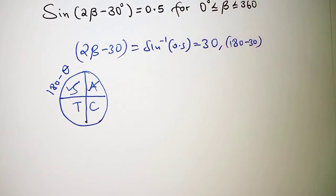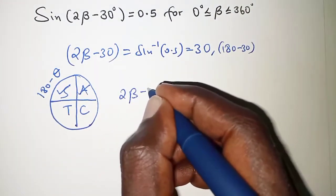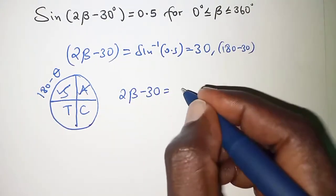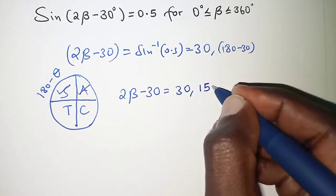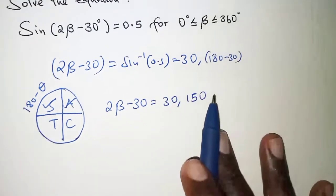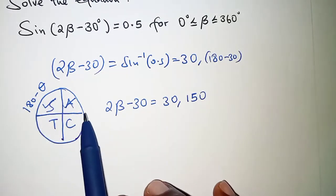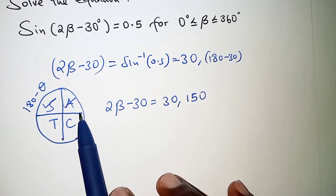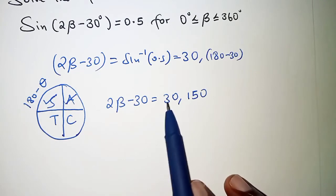So at this particular point we can therefore say twice beta minus 30 is equal to 30 comma 150. And at this particular point these two values are obtained in the first revolution. And then in the second revolution we add 360 to 30 and 150.